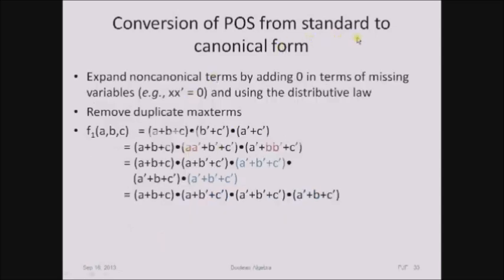Conversion of product of sums from standard to canonical form. Again, we follow two rules: expand non-canonical terms by adding zero in terms of missing variables using the distributive law — in the case of SOP we added one, but here we add zero, that is x into x-complement equals zero — then remove duplicate terms. The only difference here is we add zero using x into x-complement. The second term is missing variable a, and the third term is missing variable b.